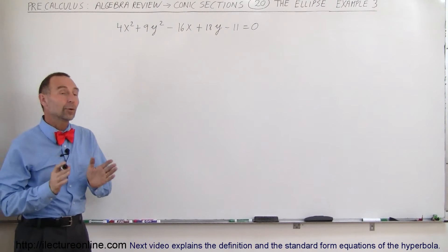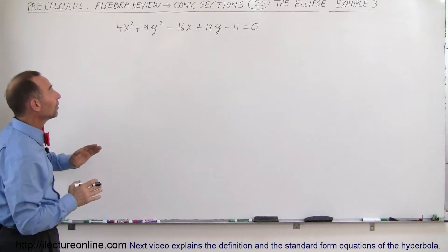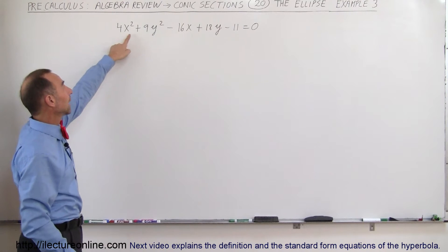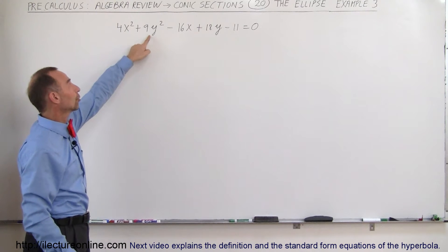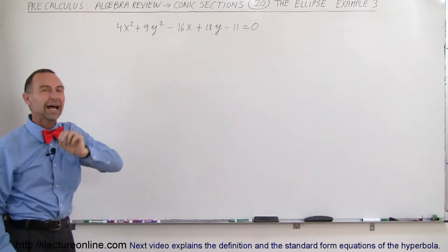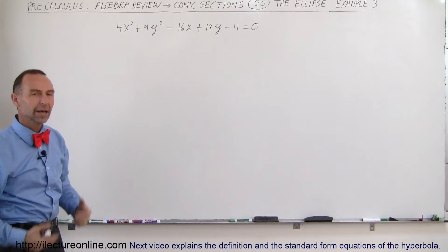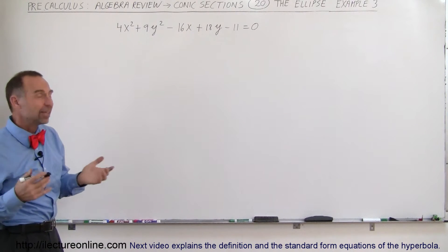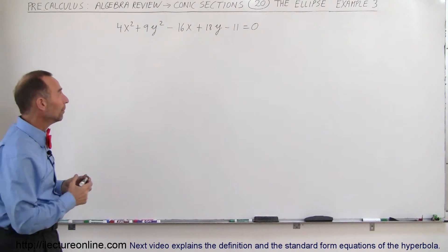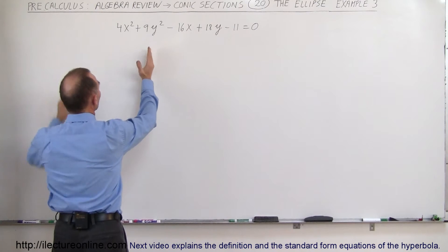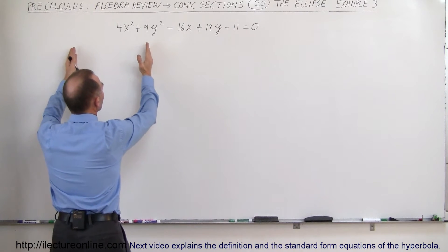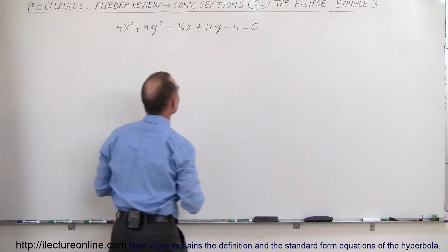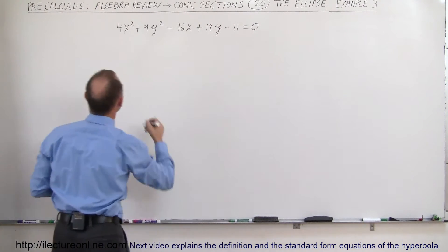Welcome to Electron Online. Here we're going to do an example of how to graph an ellipse when both the x-squared term and the y-squared term have coefficients in front of them that are not equal to 1. How do we handle that? Well, kind of the same way as before. First, we're going to put all the x-terms together, all the y-terms together, and all the constants on the right side of the equation.